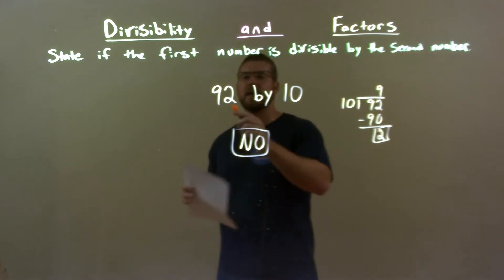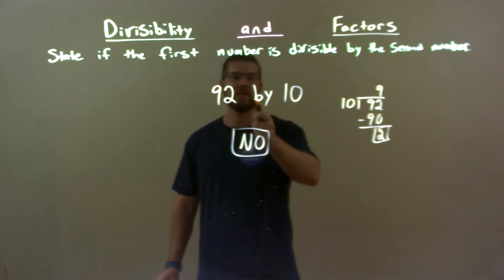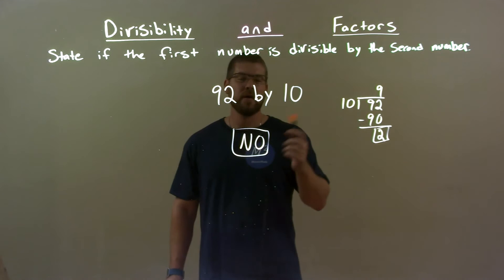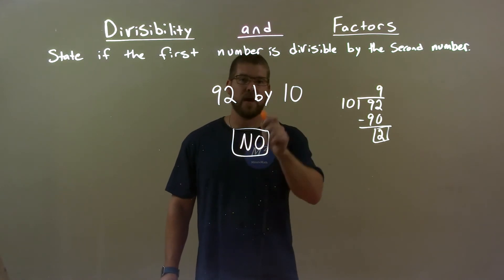Quick recap, we're given 92 by 10. Is 92 divisible by 10? Well, 10 does not go evenly into 92, and so our final answer is no.